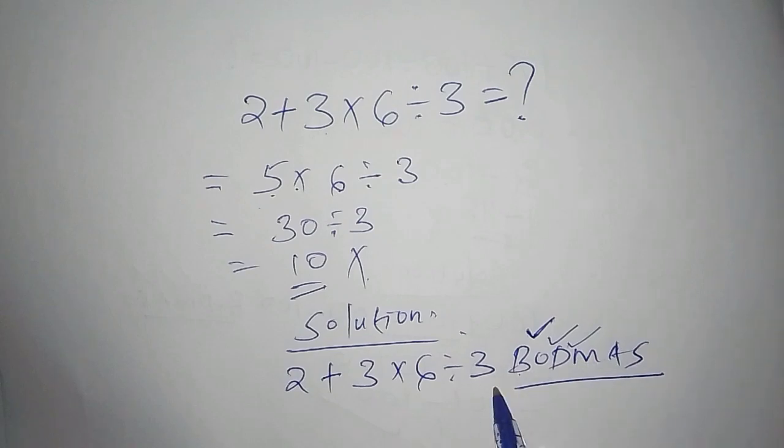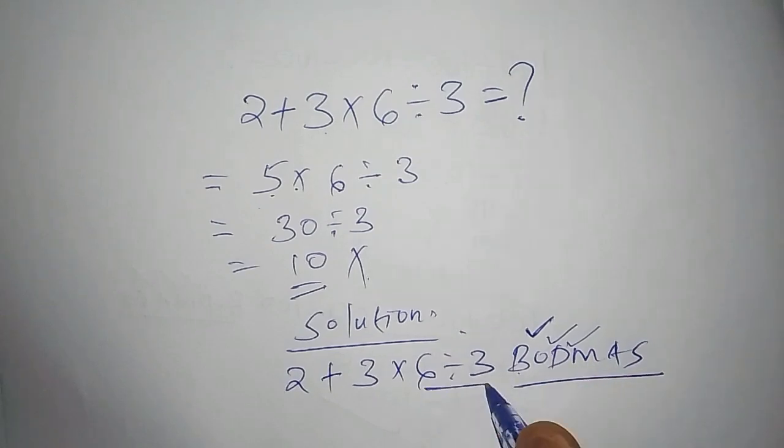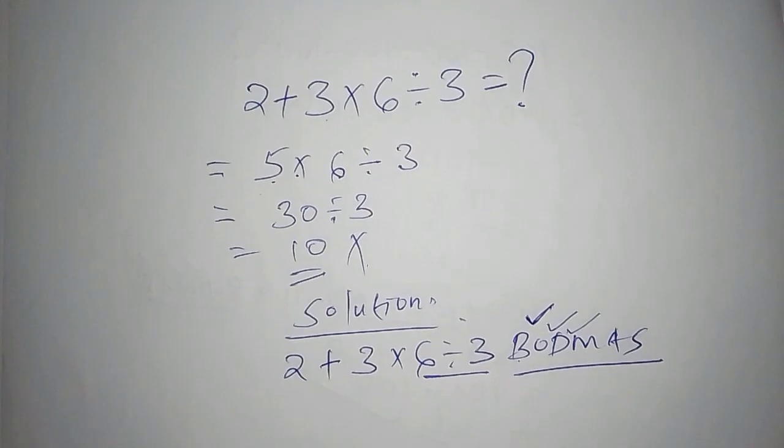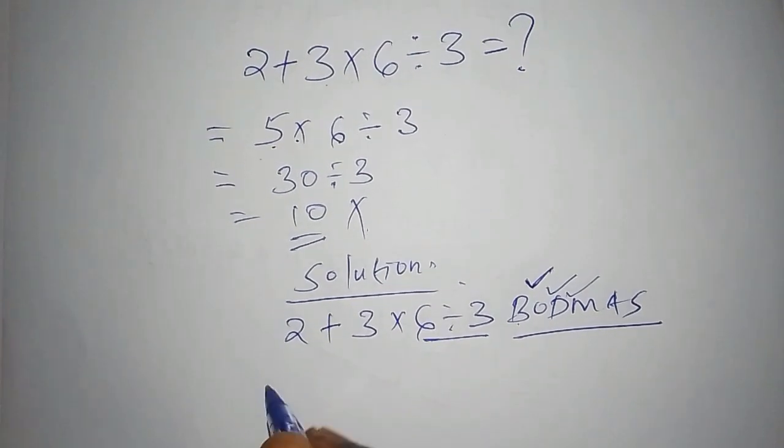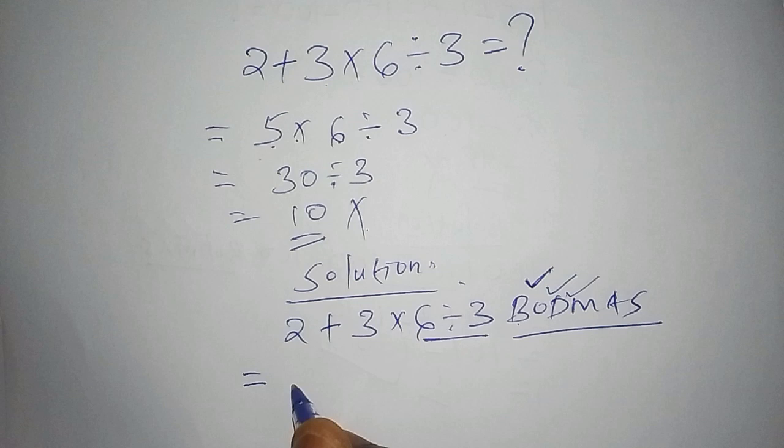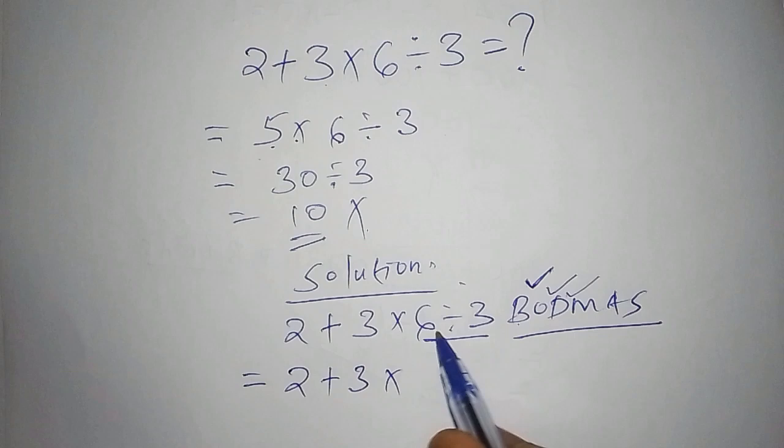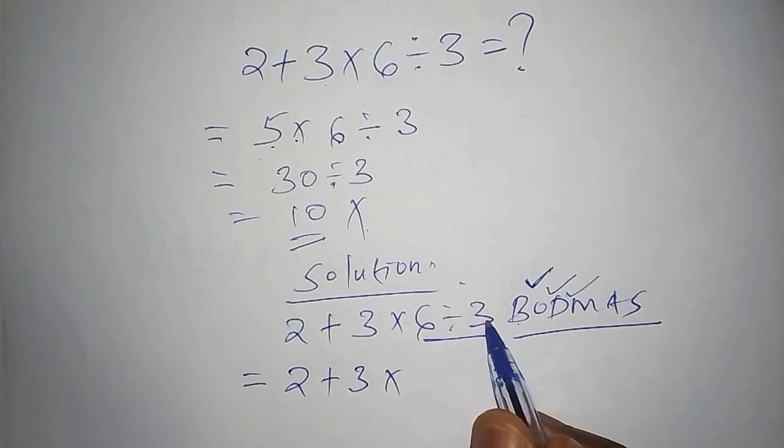Then now we move to D. D means division, so there is a division. We need to work out this one first. So from there, we shall say this equals, we'll just write this one the way they are, 2 add to 3 multiply by 6 divide by 3.